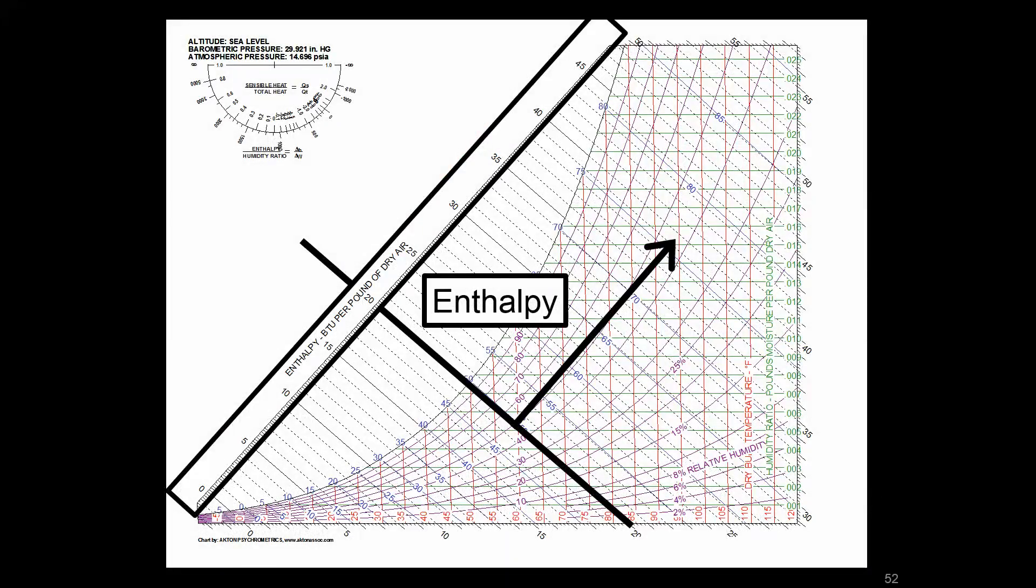But on the psych chart, we can look at it here. It has a very similar axis as wet bulb, but those lines of constant enthalpy are a slightly different angle than those of the wet bulb lines. But similarly, it does go from bottom left from lower to top right, increasing value of enthalpy. Here it's about 0 to 50 on a standard ASHRAE sea level chart.